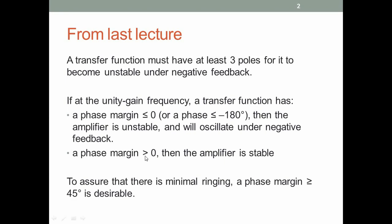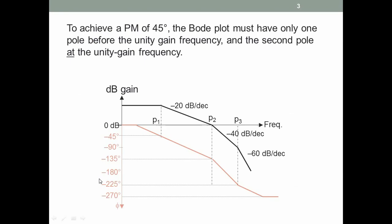If the phase margin is greater than zero, then the amplifier is stable. But for making sure that the ringing is minimal, a phase margin greater than or equal to 45 degrees is desirable. To achieve a 45 degree phase margin, if you look at the Bode plot, there can be only one pole above the unity gain or 0 dB frequency, and the second pole must be at the unity gain frequency. Such a Bode plot has a phase margin of 45 degrees.